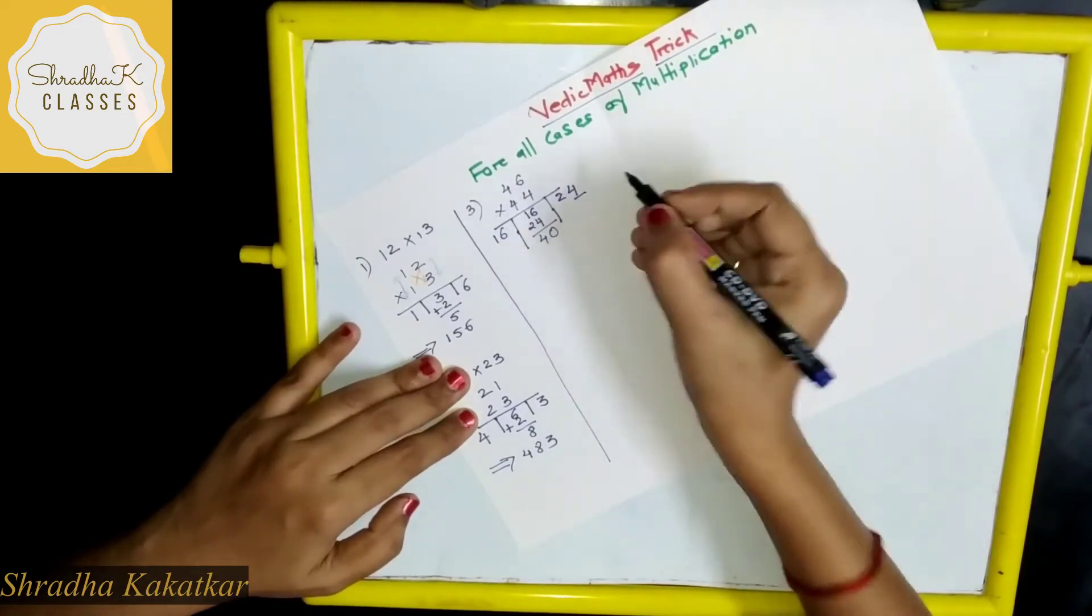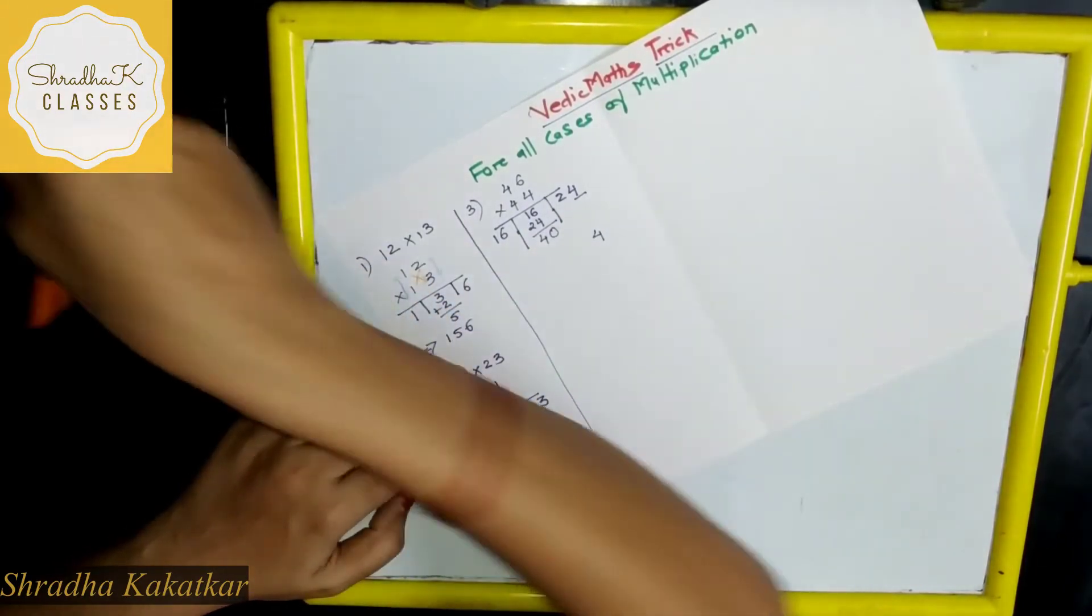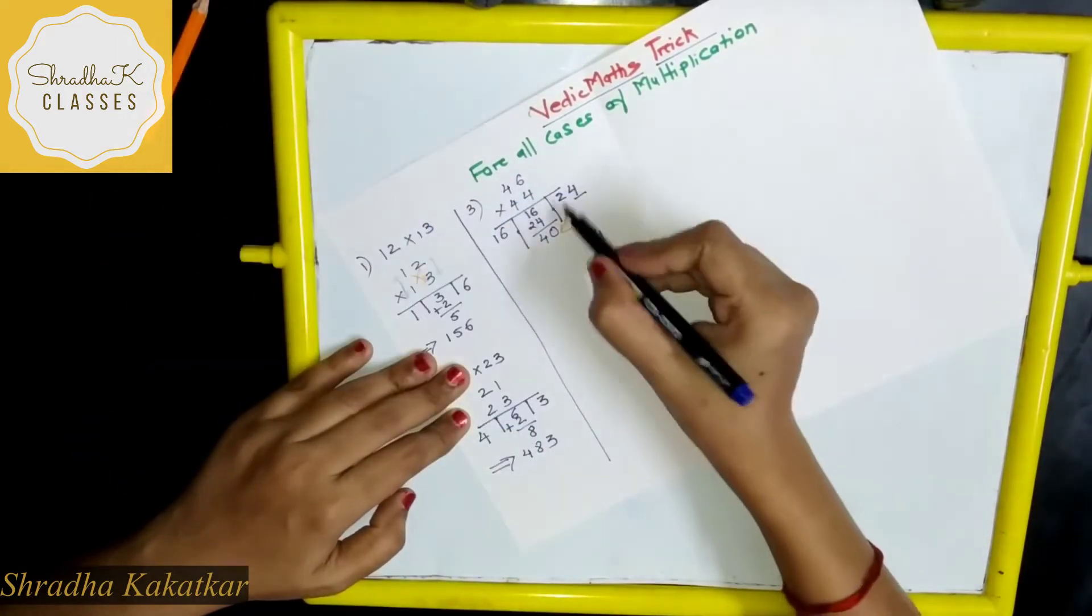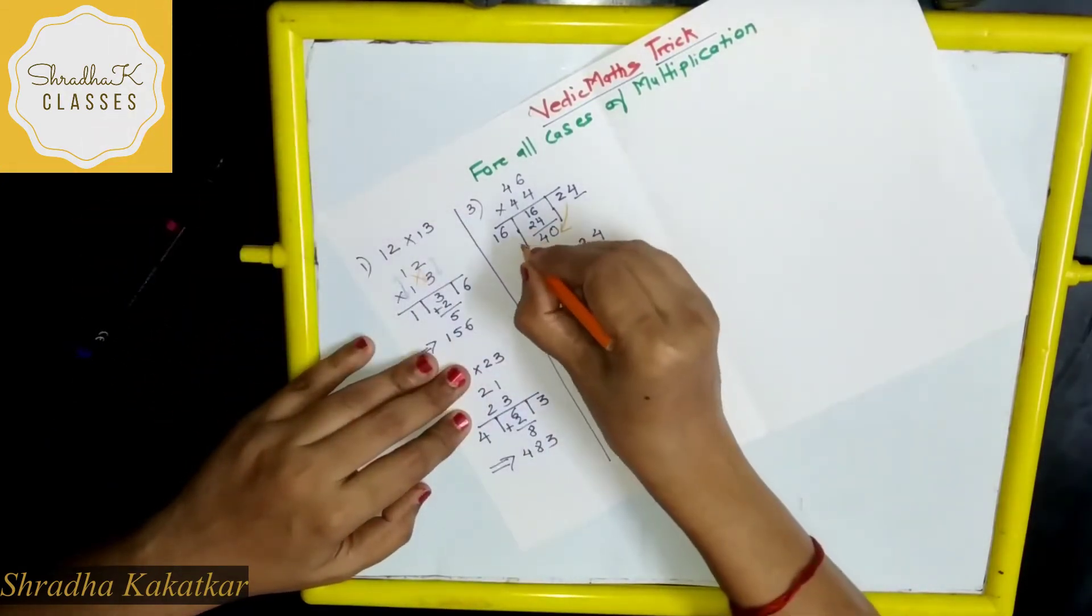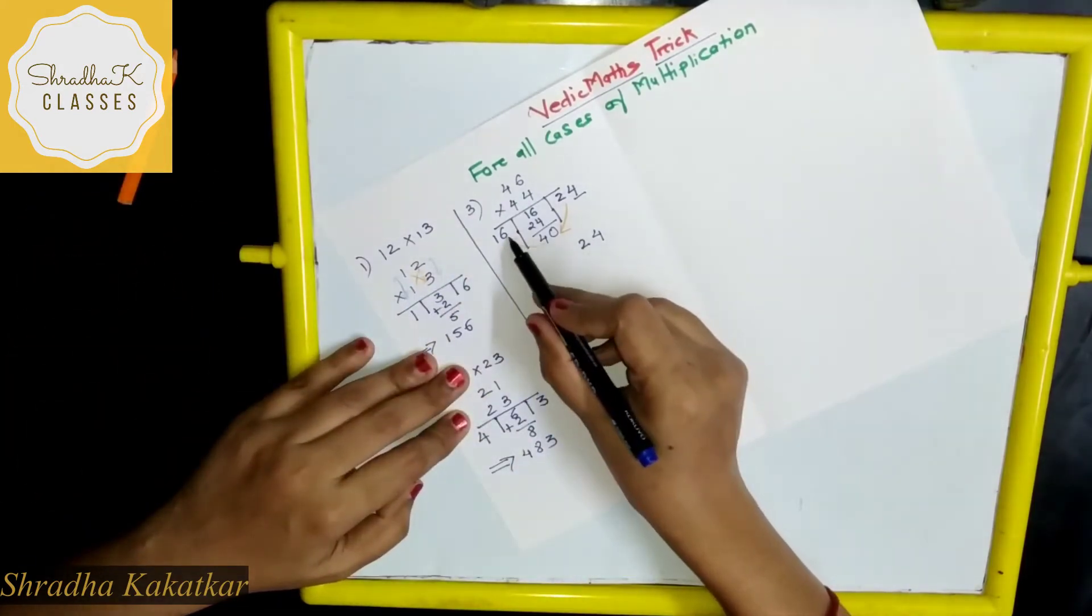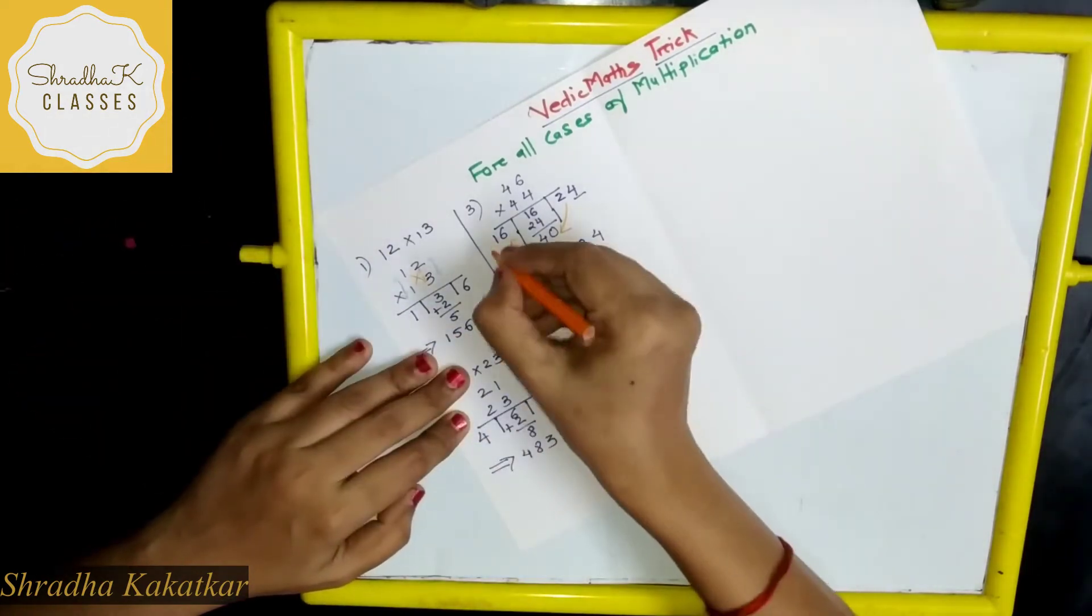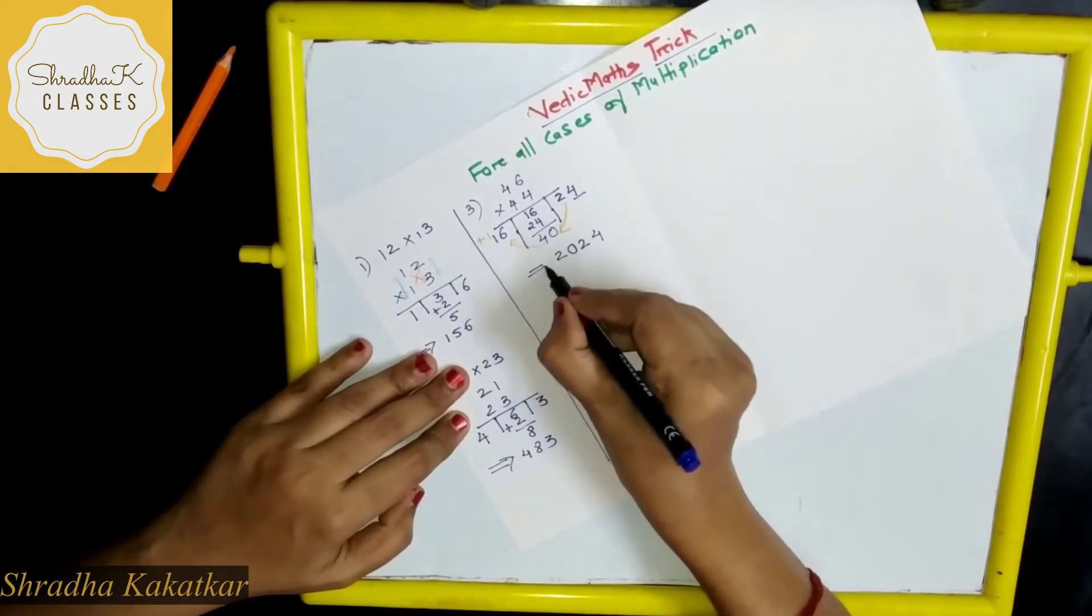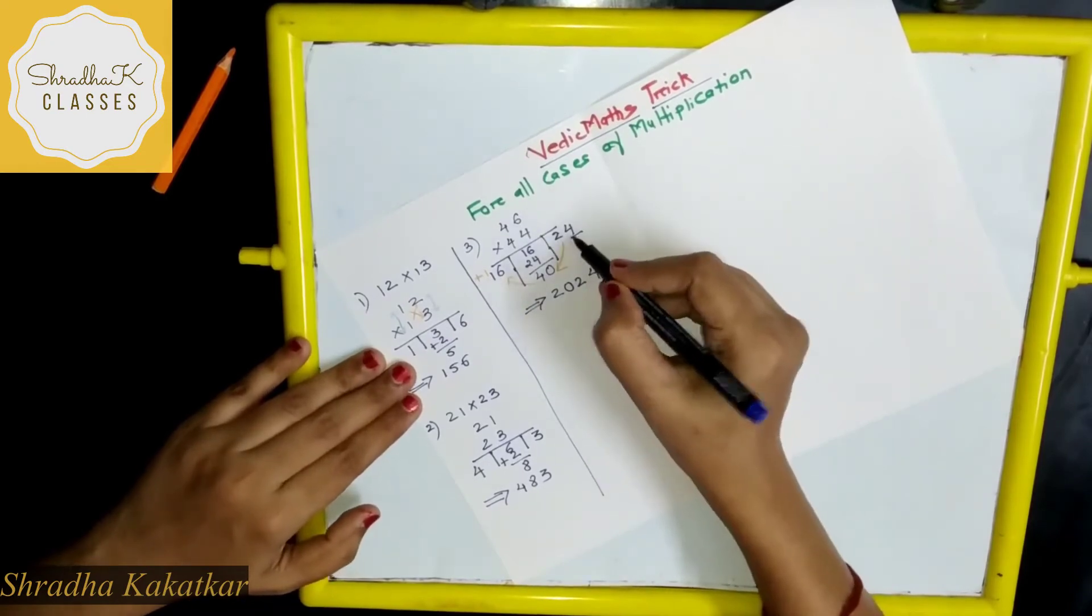So this digit will remain as it is. So write 4. Then 2 you will have to carry forward. This 2 carry forward to this 0. So 2 plus 0 is 2. Next, this 4 carry forward to this 6. That is add to 6. So 4 plus 6 is 10. So write 0. Now carry is what? 1. So plus 1. So 1 plus 1 is 2. Write it. This is your answer. Remember when you get 2 digits at the end.